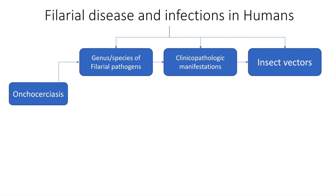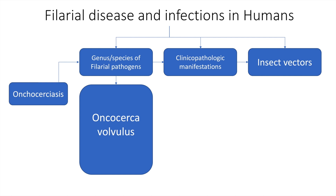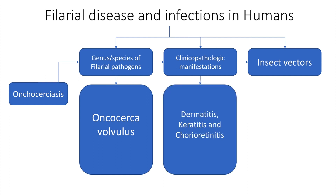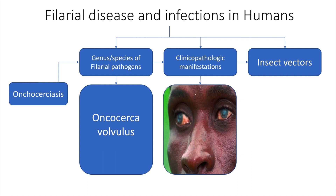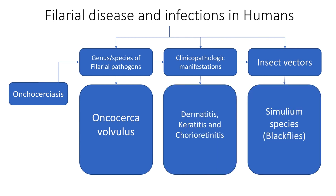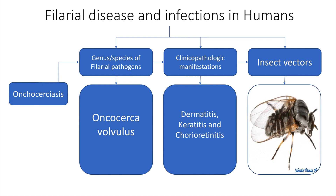We now move on to onchocerciasis. It is caused by the genus Onchocerca, species volvulus. Clinico-pathologic manifestations include dermatitis, keratitis, and chorioretinitis. Two of which you can see in this image — the dermatitis and the chorioretinitis. The insect vectors include Simulium species, which look like this.